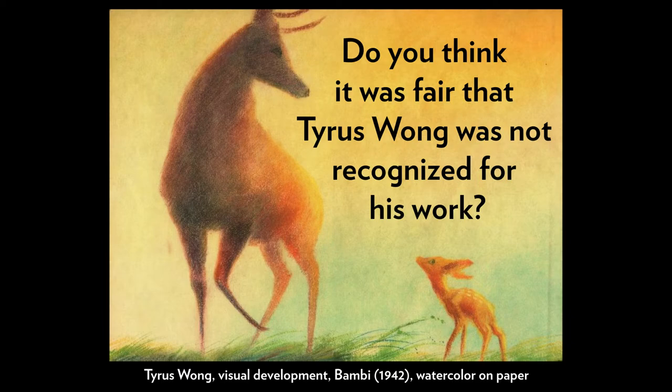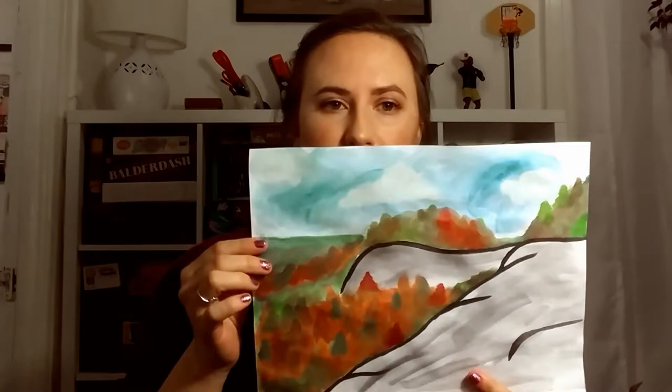Today we're making our own landscapes inspired by Tyrus. I am going to be using watercolors to make my landscape. I already made a sample, which you can see here. If you have paint and especially watercolors, I do recommend that you use those. But if you don't have paint, don't worry — you can definitely make a landscape with any materials that you have at home: markers, colored pencils, crayons.